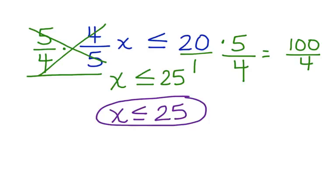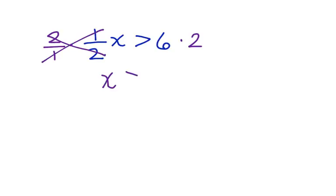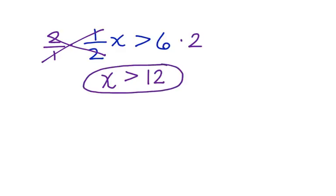Let's take a look at another one: 1 half x is greater than 6. Again, I want to get x alone, so I'm going to multiply by the reciprocal of 1 half. And I'm going to do that on the right side too. These cancel. Bring down the x. x is greater than 12. Any value that I substitute into this inequality that is greater than 12 will make it a true statement.